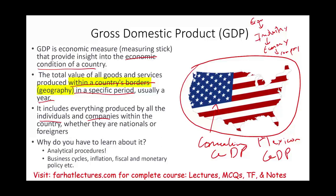To summarize, GDP is a measuring stick that gives you insight about the economic condition of a country. This way, if your company is not doing well, you might say it's because the overall GDP is going down — that could be an explanation. But if we don't understand what GDP is, we cannot put things into perspective. Now let's go ahead and see how GDP can be computed, because there is more than one way to compute it.